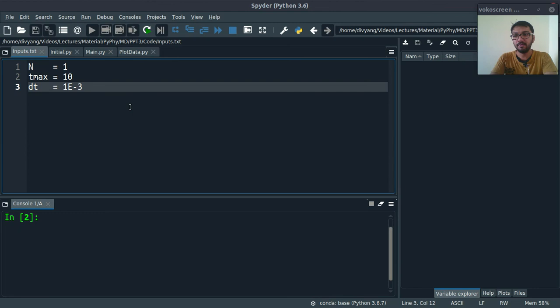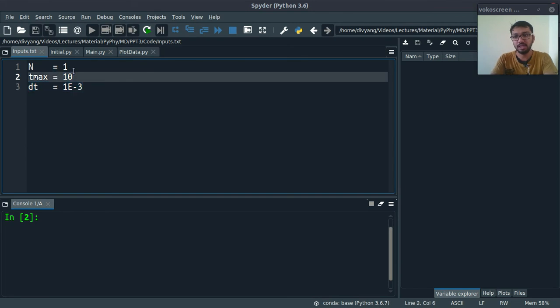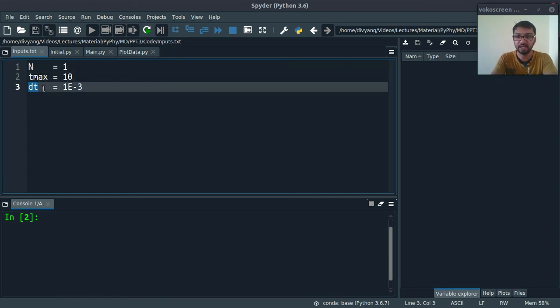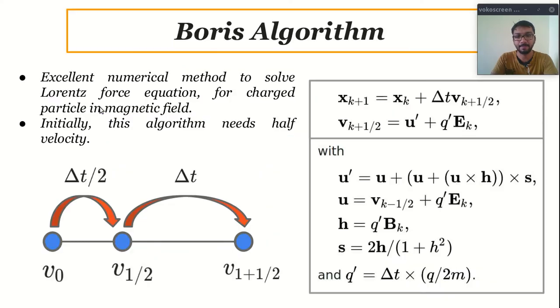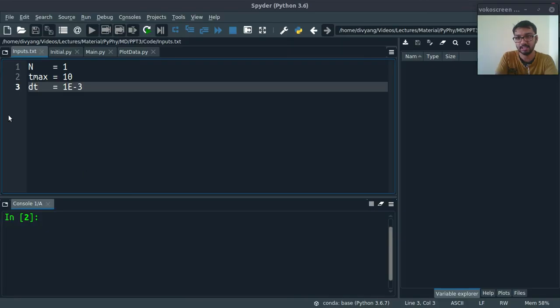So, in spider, we have inputs.txt, as you can see here. This n is the number of particle. T max is the simulation time. And, dt is our time step. This delta t is our dt.